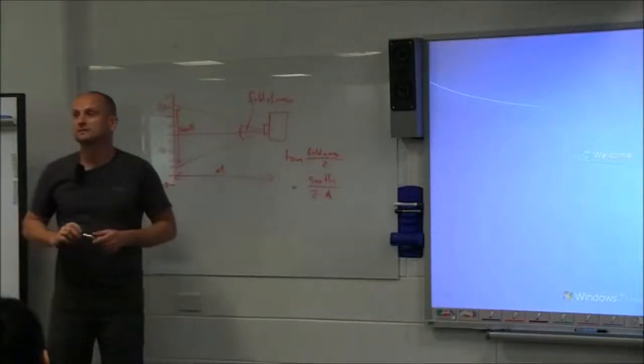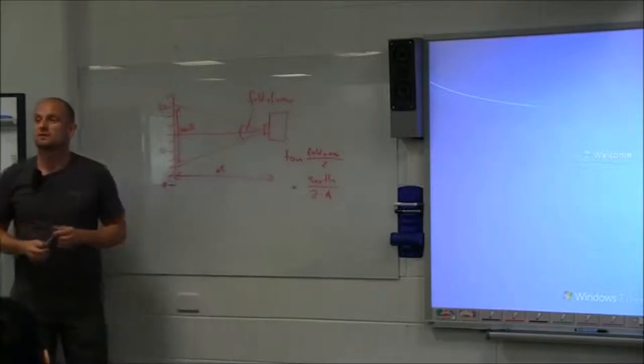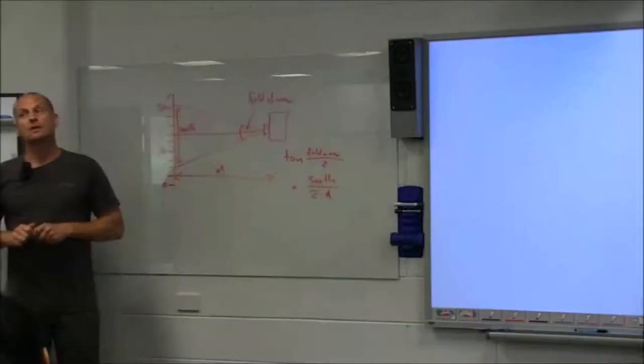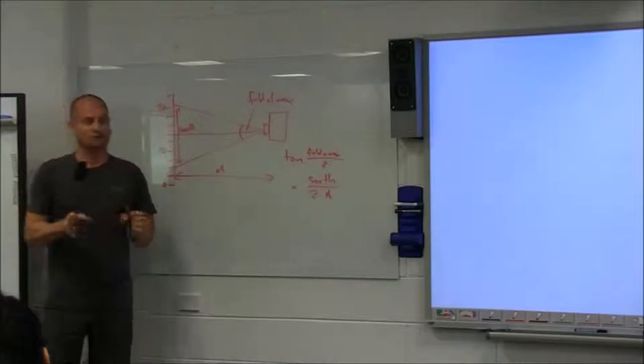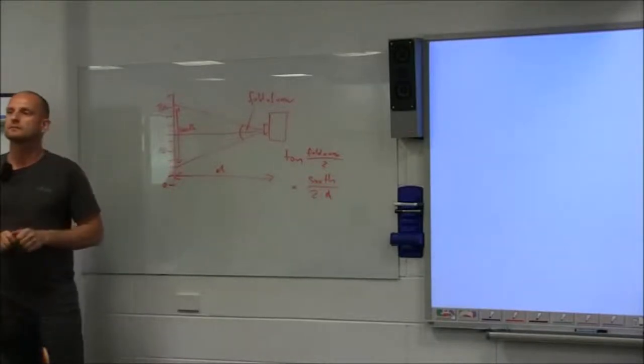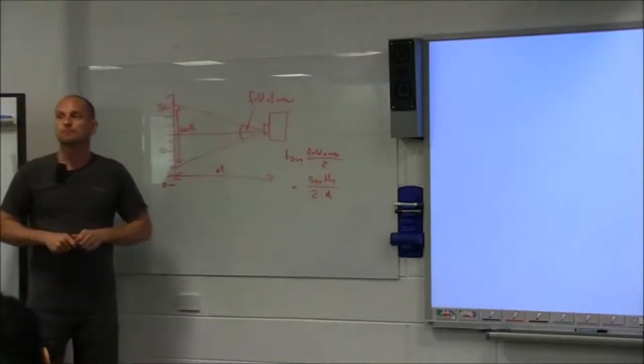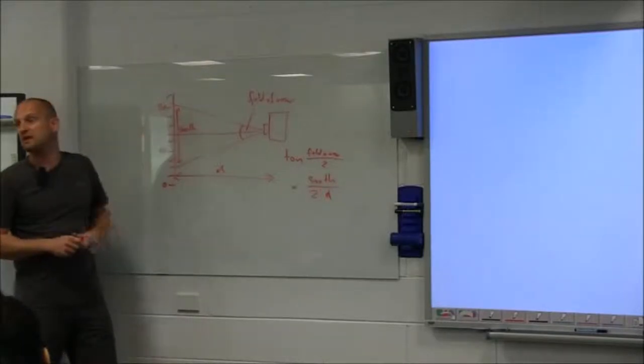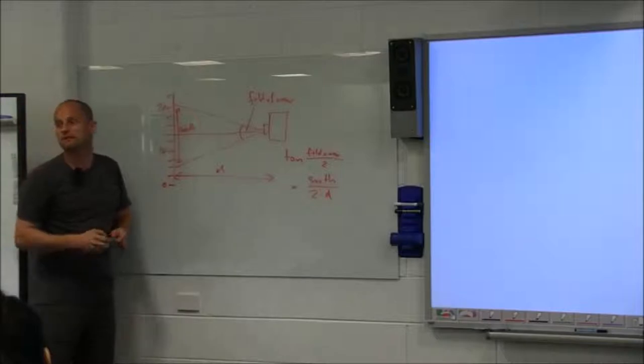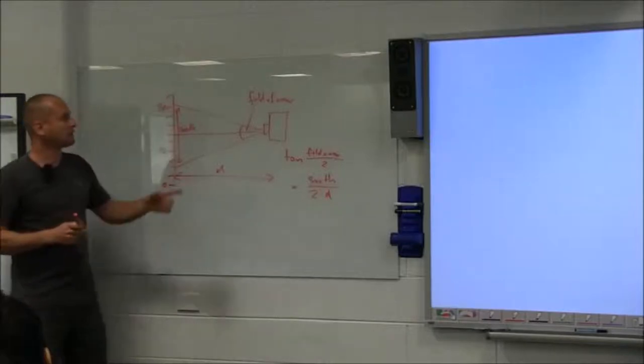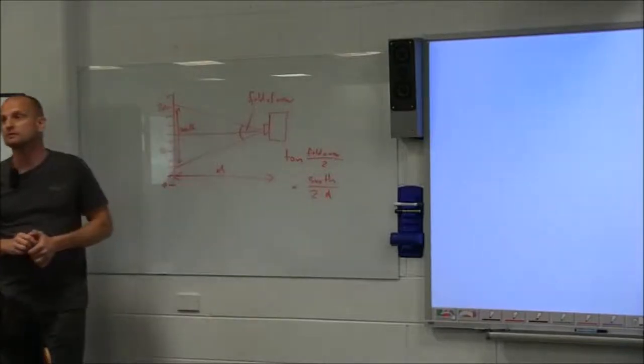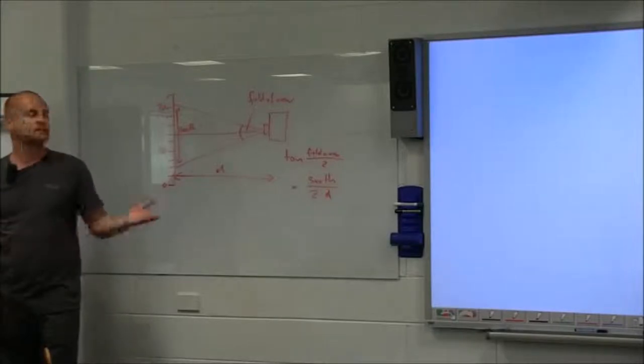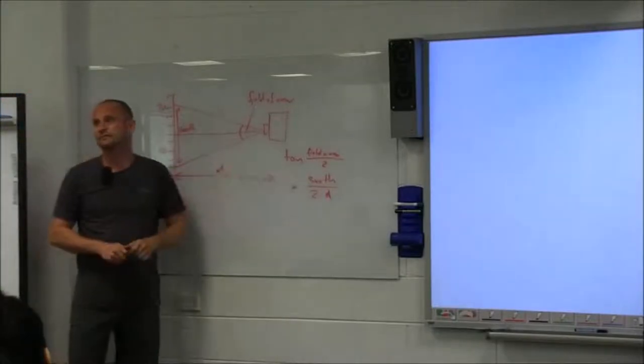Pixel size—how do you go about that? Not on the sensor, but on the target, on the ground if you've got a remote sensing system. You can take the swath divided by the number of pixels, or take any length and count pixels. Might be easier. And then instantaneous field of view? Once you've got a pixel size, straightforward. Same as that.